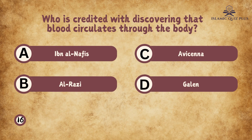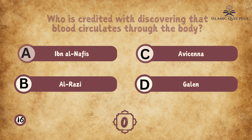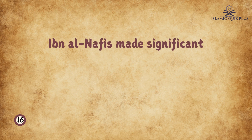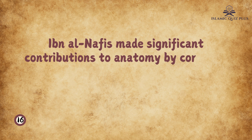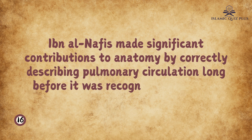Question 16: Who is credited with discovering that blood circulates through the body? A. Ibn Al-Nafis, B. Al-Razi, C. Avicenna, D. Galen. The correct answer is A. Ibn Al-Nafis. Ibn Al-Nafis made significant contributions to anatomy by correctly describing pulmonary circulation long before it was recognized in Europe.